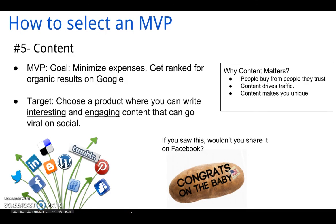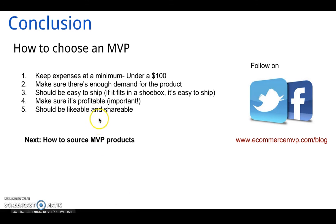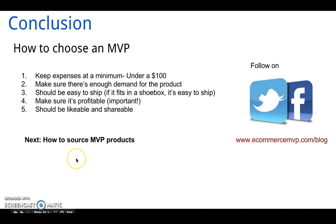That wraps up this video on how to select an MVP product. To recap: as an MVP business, you want to keep expenses at a minimum and mitigate risk. Try to find products that cost less than $100 to acquire. Make sure there's enough demand for the product. The product should be really easy to ship — as a rule of thumb, if it fits in a shoe box, it'll be easy to ship. Make sure it's profitable, and make sure the product is likable and shareable through viral content. Be sure to check out my next video where I walk you through the process of actually sourcing MVP products from suppliers overseas or domestically. If you like the video, please follow us on social media — links are at the bottom — and check back at our blog for new content and videos to help you run your MVP business. Thank you.